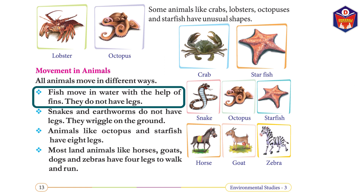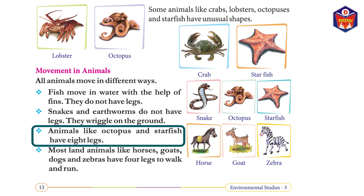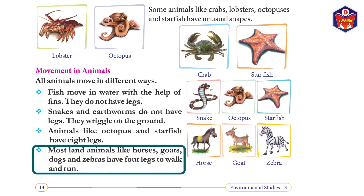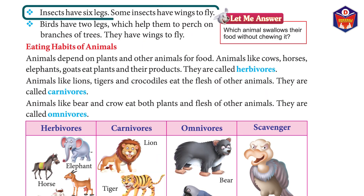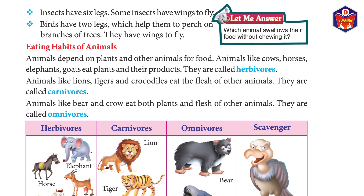Snakes and earthworms do not have legs; they wriggle on the ground. Animals like octopus and starfish have eight legs. Most land animals like horses, goats, dogs, and zebras have four legs to walk and run. Insects have six legs. Some insects have wings to fly. Birds have two legs which help them to perch on branches of trees, and they have wings to fly.